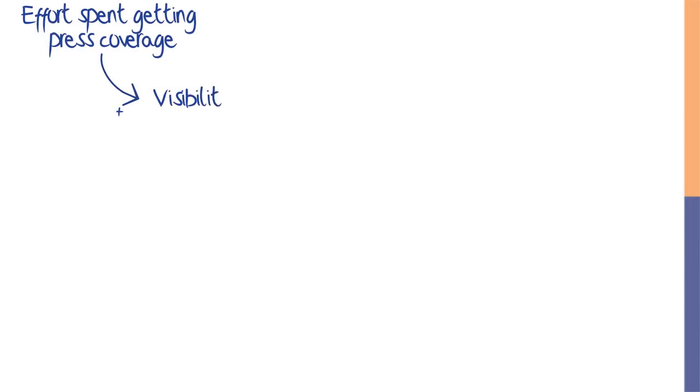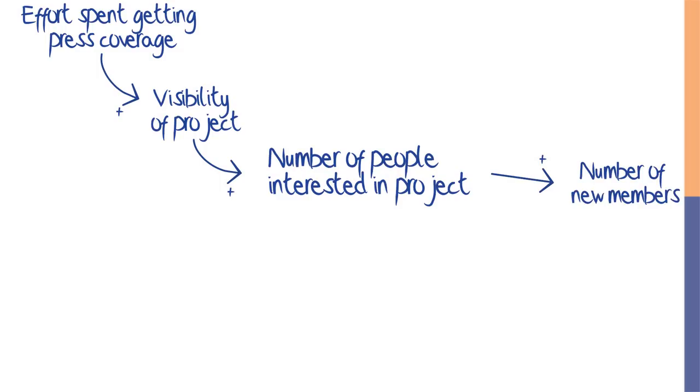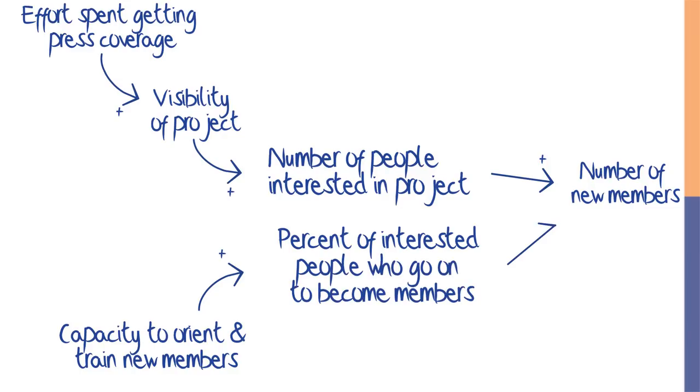Even a simple diagram can help you think ahead, especially if you ask yourself hard questions about it. In a workshop I led recently, an organization was trying to improve its visibility to attract new members. Their strategy was to spend effort getting press coverage to increase visibility, which they expected would lead to more people being interested in their work and an increase in new members. When they asked what else would have to be true for the strategy to pay off, they realized they also needed to build their capacity to orient and train new members so that the percentage of interested people who became new members was as high as possible.